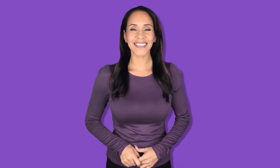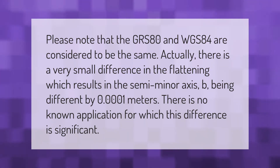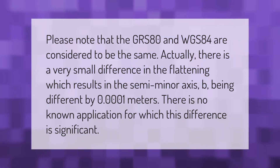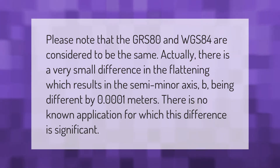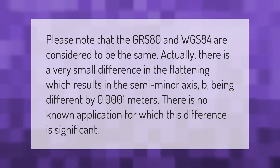Please note that the GRS-80 and WGS-84 are considered to be the same. Actually, there is a very small difference in the flattening, which results in the semi-minor axis b being different by 0.0001 meters. There is no known application for which this difference is significant.